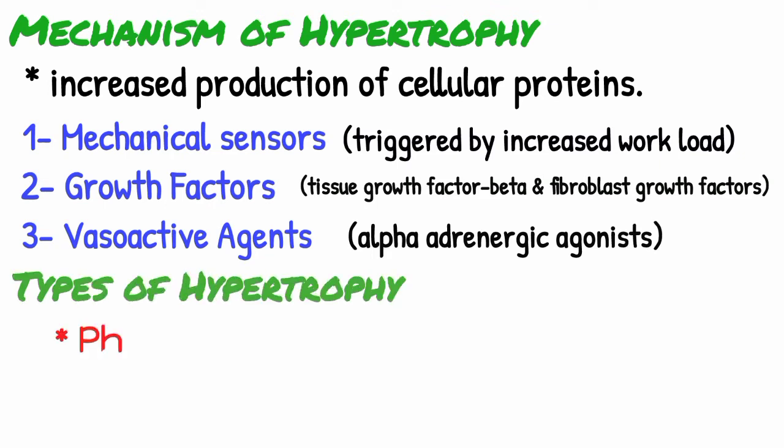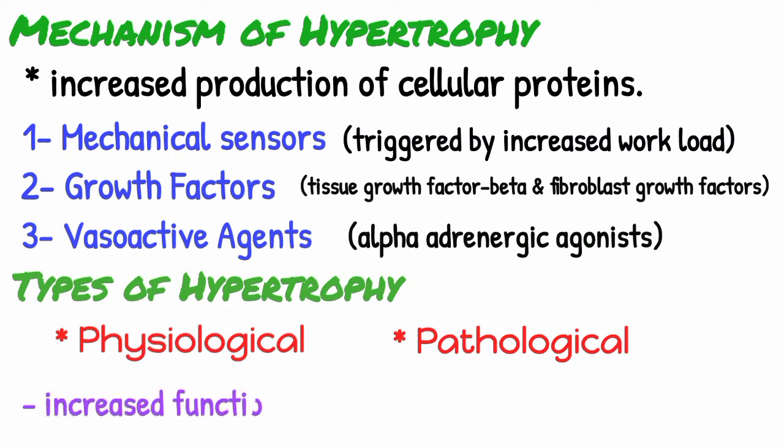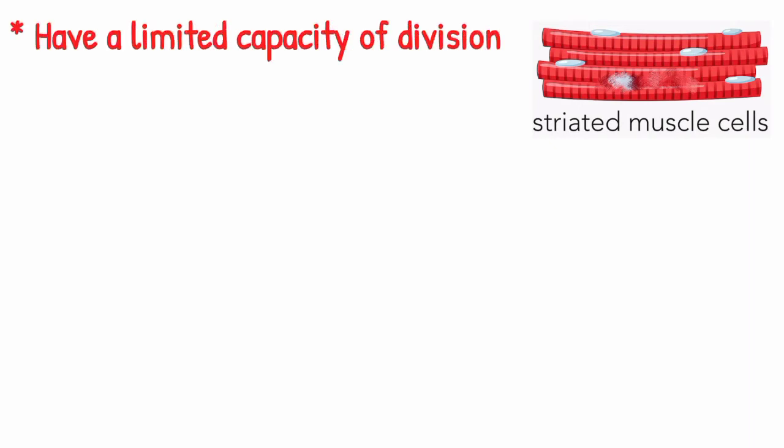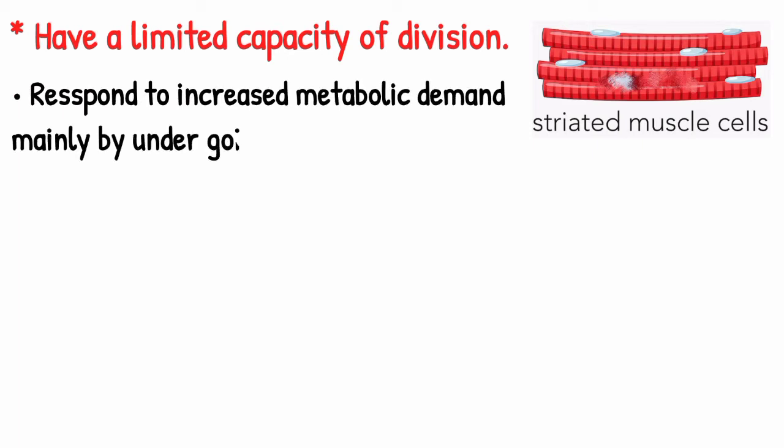Hypertrophy may be physiological or pathological. In both cases, it is caused by increased functional demand. The striated muscle cells in heart and skeletal muscles have only a limited capacity of division and respond to increased metabolic demand mainly by undergoing hypertrophy. The most common stimulus for hypertrophy of muscle is increased workload.